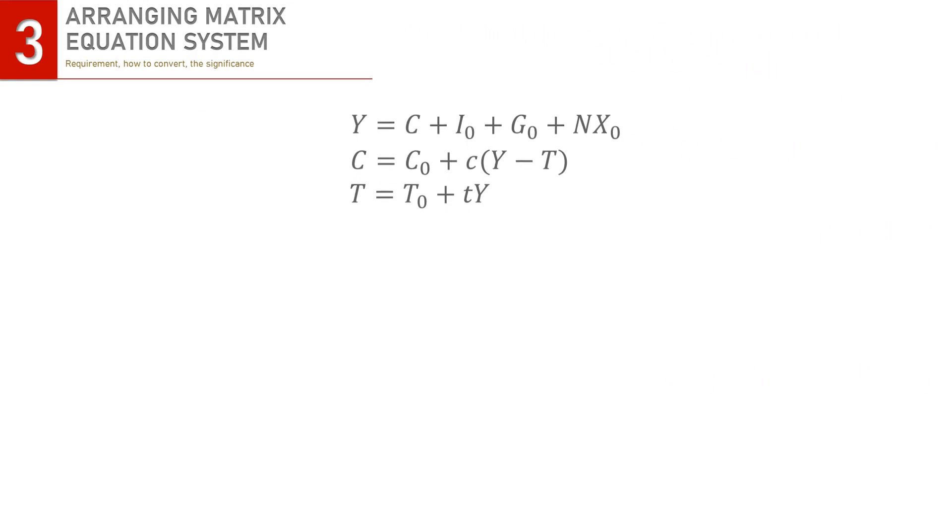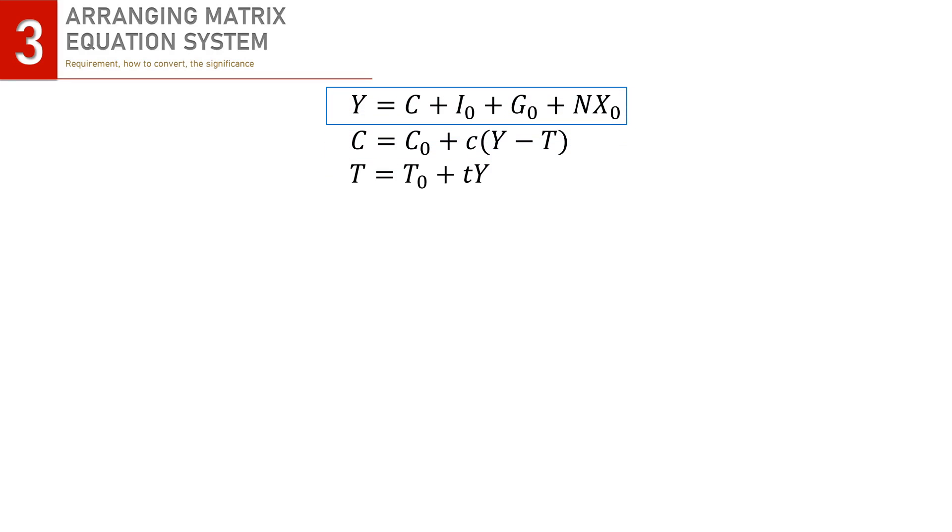Look at this equation system. It is a simple national income model, but of course our focus is not on the economics thing. We focus on the math. In this equation system, we have one conditional equation in Y equation and two behavioral equations which is the same as the information is given.